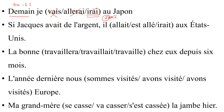The next sentence has 'si' plus imparfait in one clause — 'si + imparfait' gives the conditional. The conditional is future root plus imparfait ending. The future root for 'aller' is 'ir-', and '-ait' is the imparfait ending for 'il'. So 'irait' is the only option that makes sense and is the correct answer.